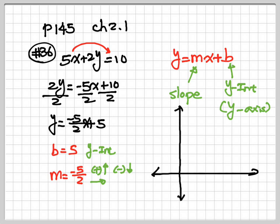Always go to your b first. b is on the y-axis. So here we count 1, 2, 3, 4, 5 — so 5 is over here. That's my starting point on the y-axis. Next, you go to your slope. Slope numerator is negative 5, so from that starting point you go down 5 spaces: 1, 2, 3, 4, 5. Denominator always goes to the right, so go right 2: 1, 2. That's my ending point. After that, you draw a line to connect the two points, and that's the graph.